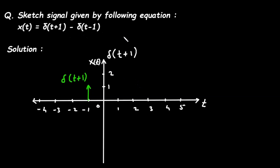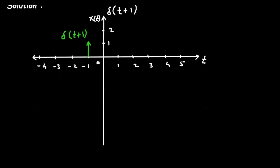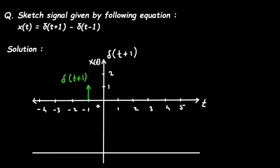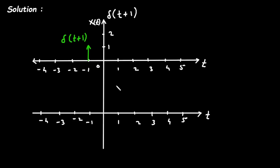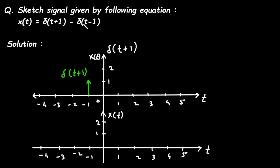Next we have to draw δ(t-1), so we will draw this graph again. We can represent signals in various forms: functional form, tabular form, sequential form, or graphical representation — this is the graphical representation. The axis goes from -4, -3, -2, -1 on the left and 1, 2, 3, 4, 5 on the right, and the amplitude axis is x(t) with values 1 and 2.